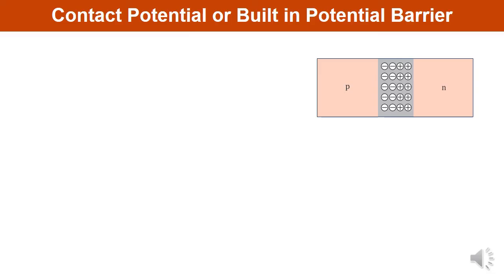This depletion layer consists of negative immobile ions towards the p-type and positive ions in the n-region. A potential difference is therefore developed across the depletion layer, which is known as contact potential.